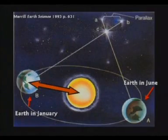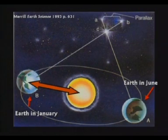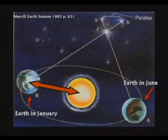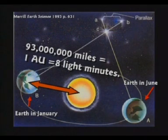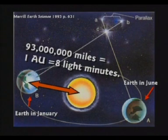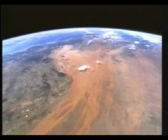They look at the star in January, then they look at the star in June, and they get a much bigger base on their triangle. This is Earth's orbit around the Sun. It's 93 million miles to the Sun — light takes 8 minutes to get here from the Sun. It's called one astronomical unit, the distance from the Sun to the Earth. So we are 8 light minutes from the Sun, which means the diameter of our orbit is 16 light minutes.